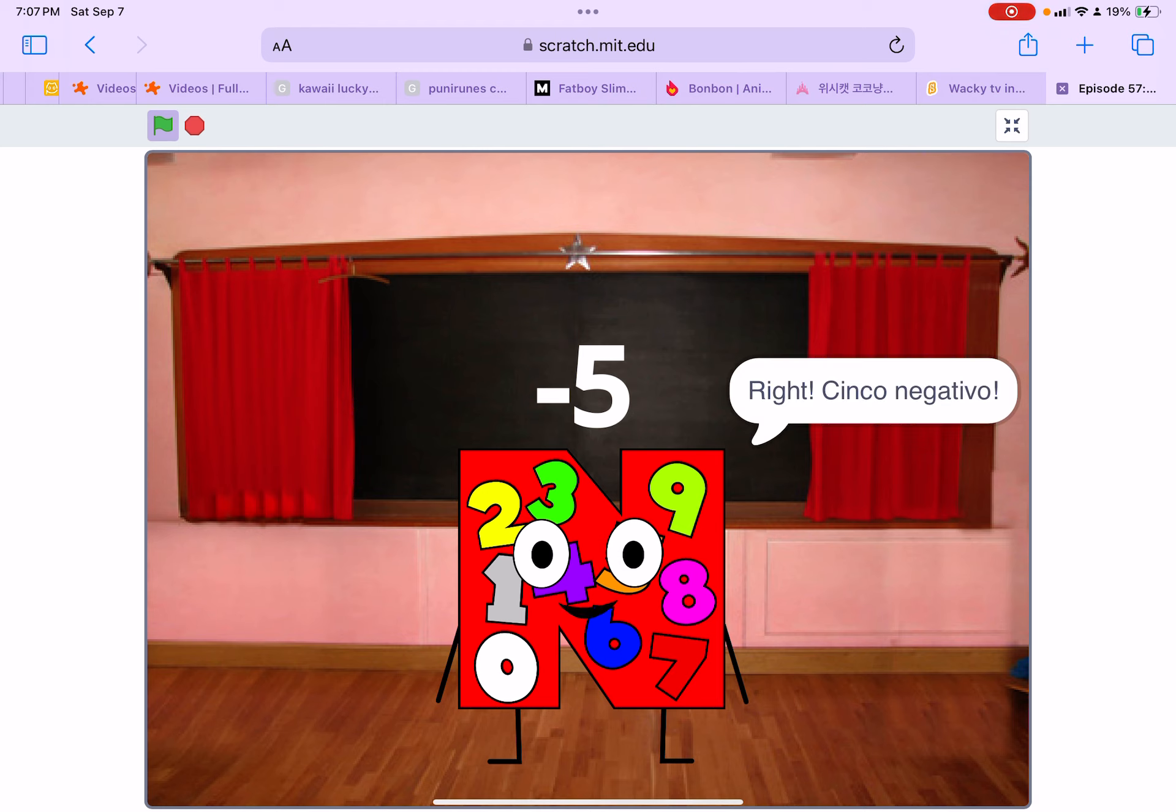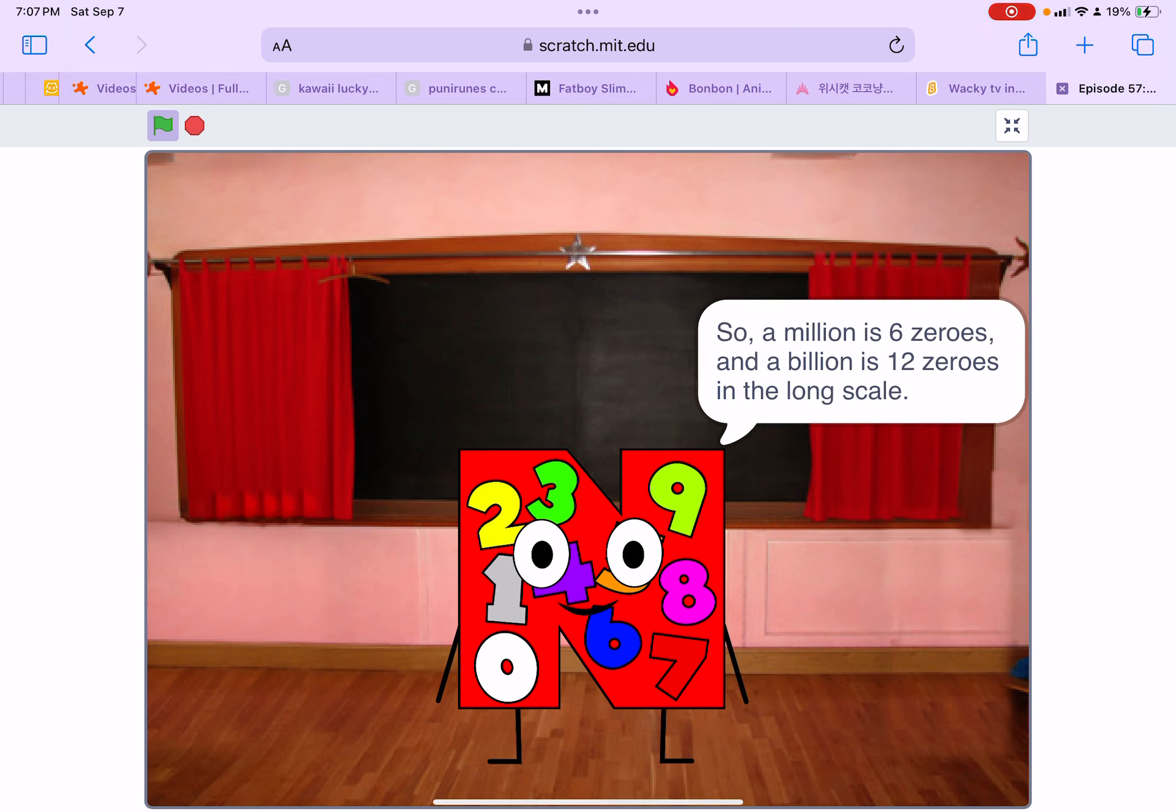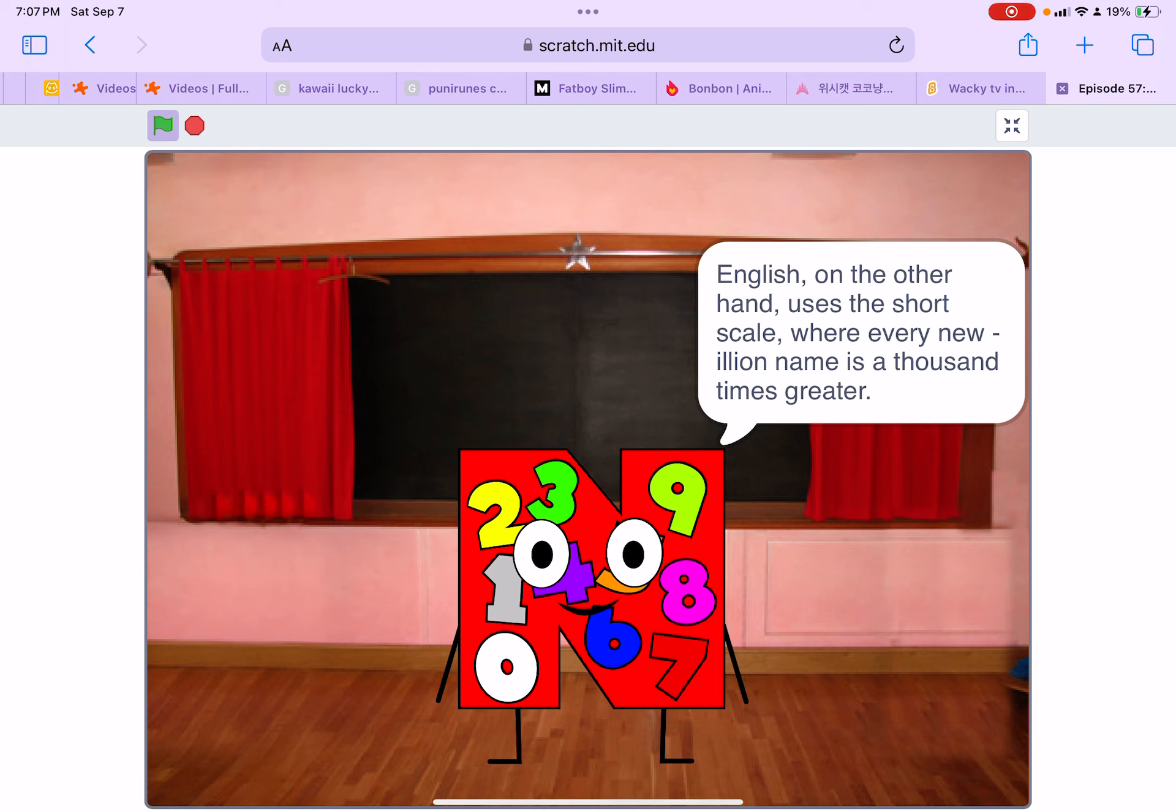Now let's review. Spanish uses what's called the long scale. In the long scale every new -illion name is a million times greater than the last one, so a million has six zeros and a billion has 12 zeros in the long scale. English on the other hand uses the short scale where every new -illion name is a thousand times greater.